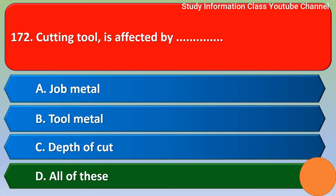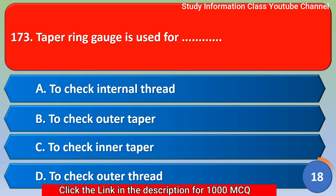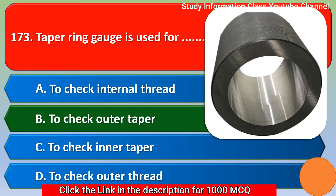Next question: tapering gauge is used for — option A: to check internal thread, option B: to check outer taper, option C: to check inner taper, option D: to check how to thread. The correct answer is option B: to check outer taper.